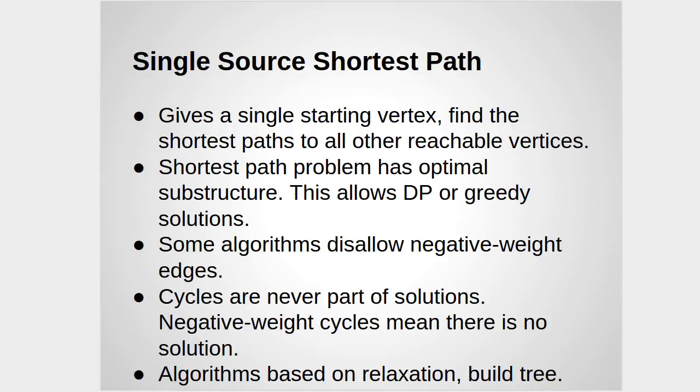In this particular problem, the idea is we have a graph, it's a directed graph, and it has weights on the edges. And we have one particular vertex in our graph that we call the starting vertex. And we want to find the shortest path to every other vertex that's in the graph.